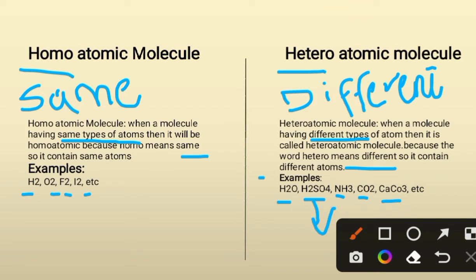Ammonia (NH₃) is made up of three hydrogen atoms plus one nitrogen atom. Carbon dioxide (CO₂) is made up of one carbon plus two oxygen atoms. Calcium carbonate (CaCO₃) is made up of one calcium, one carbon, and three oxygen atoms. All of these contain different types of atoms, which is why they are known as heteroatomic molecules.